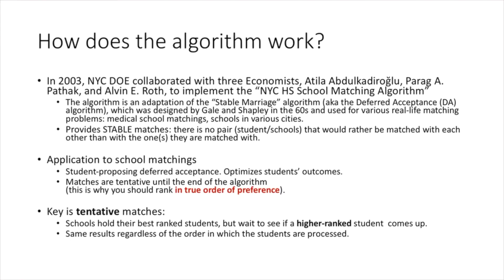The benefit of this algorithm is that it provides stable matching. By stable, we mean that there is no pair — in our case, a student-school pair — that would rather be matched with each other than with the ones they are currently matched with. This doesn't mean a student may not prefer another school, or that a school may not have prioritized other students, but fair-wise, you won't have a student and school that both would have preferred to be matched together.